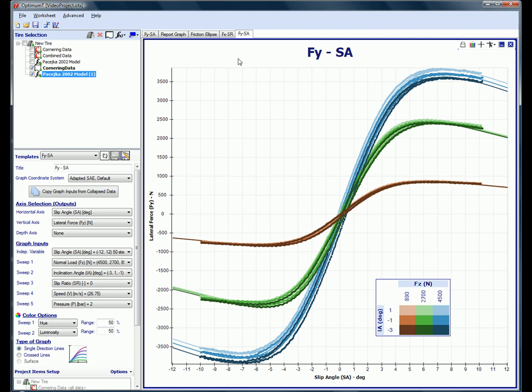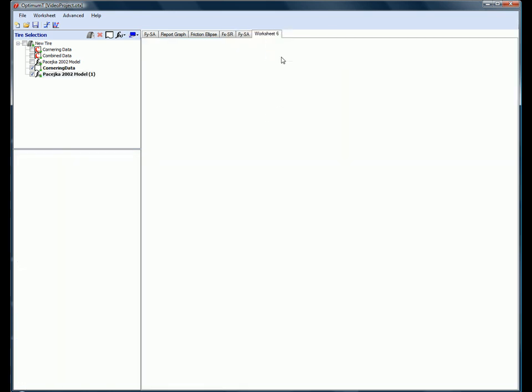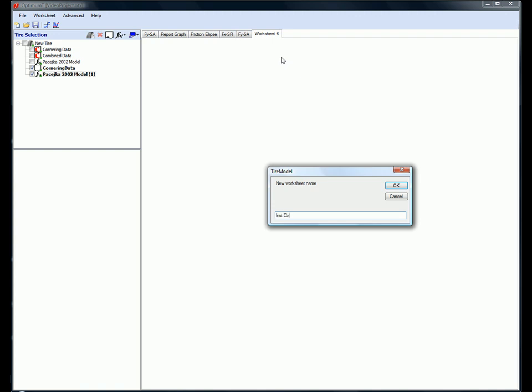Optimum T is organized into worksheets. This allows you to create a number of graphs and display them separately. We'll create a new worksheet now, and we'll rename it Instant Cornering Stiffness, since this is what we're going to be putting on the graph.